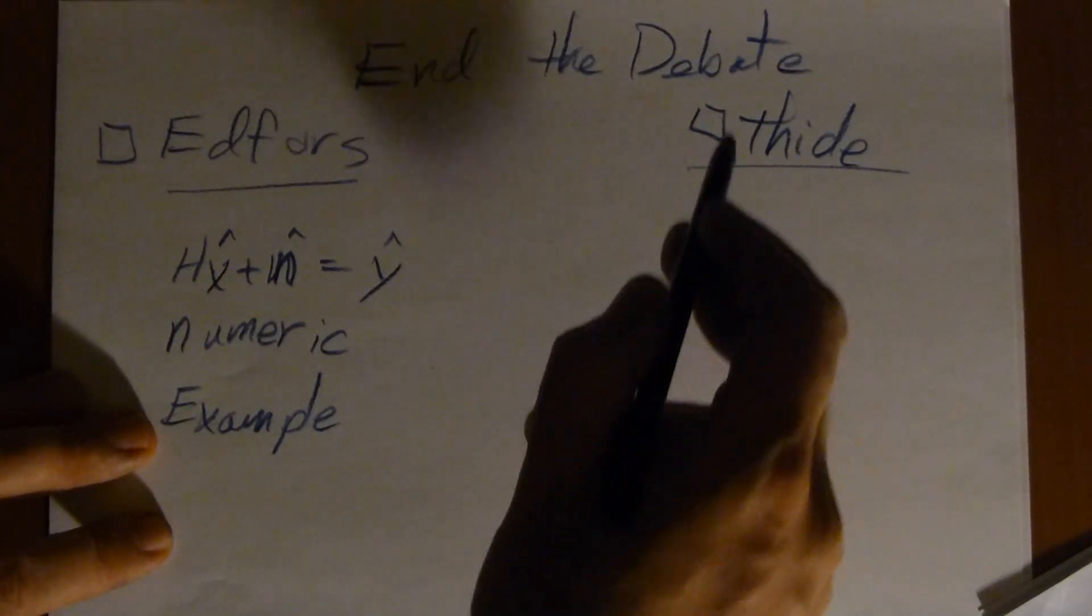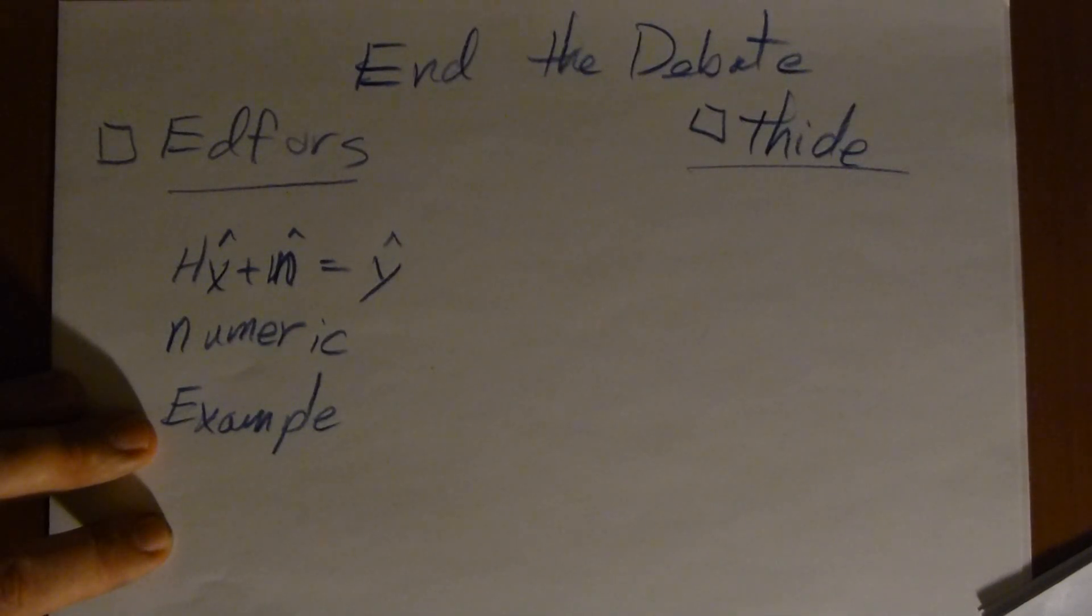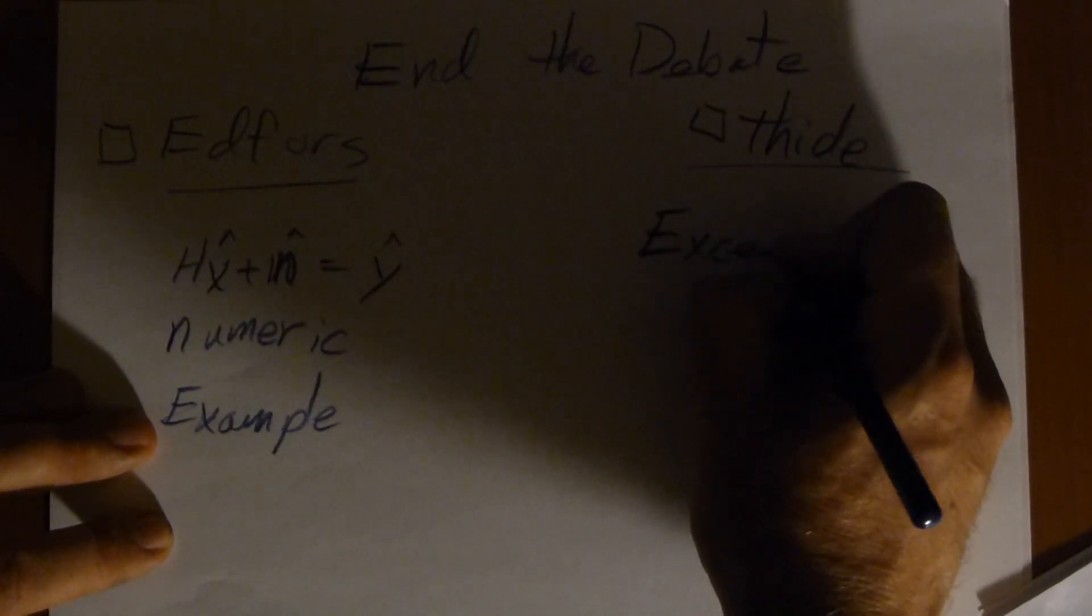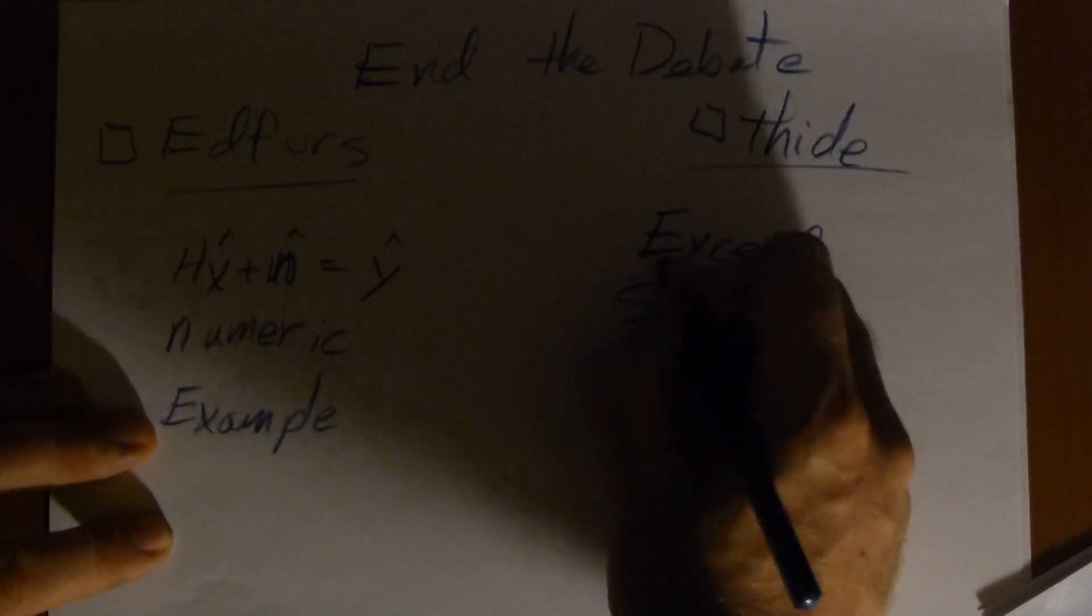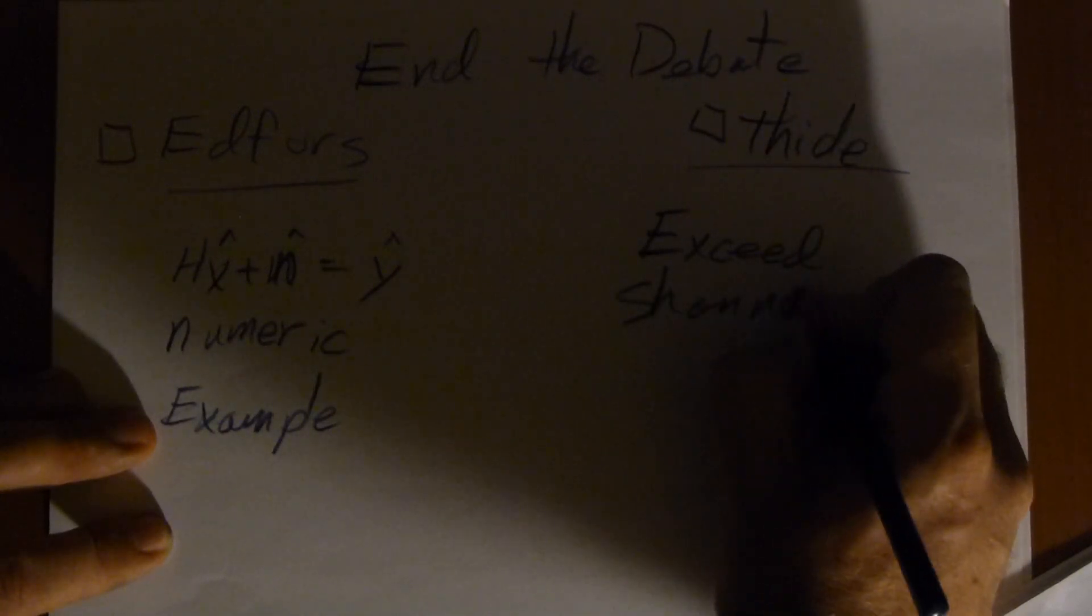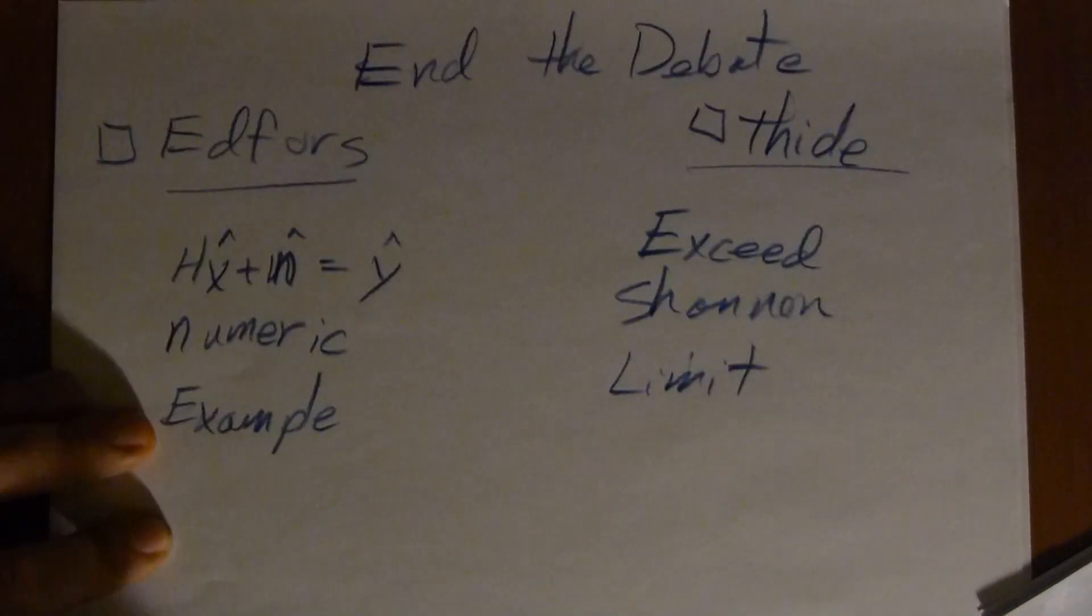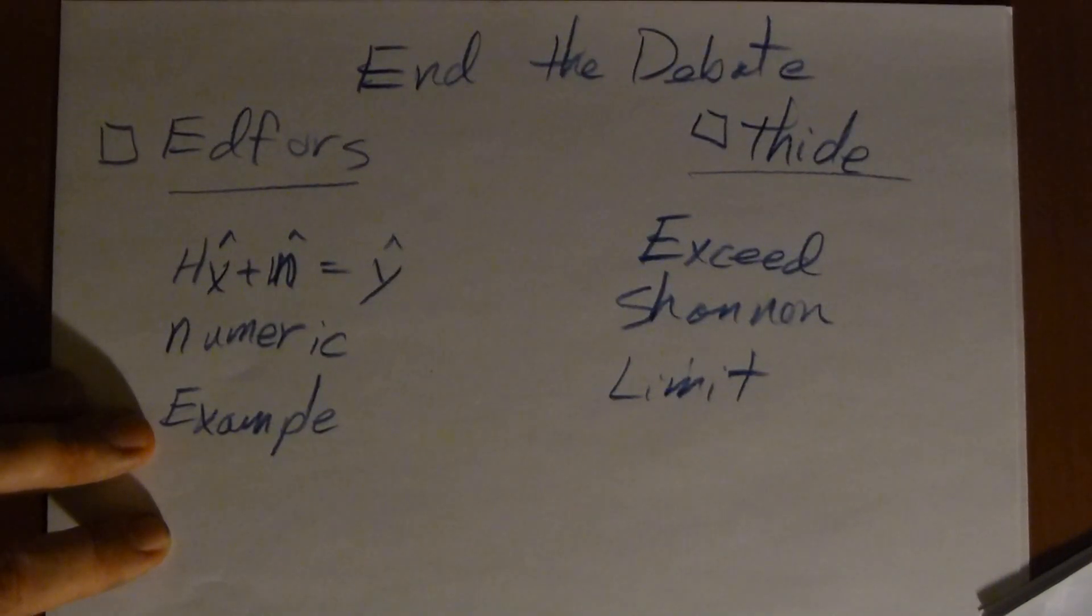Now, both Thide on the other hand, who I'll be perfectly honest, my money is on. He could do something else. Exceed the Shannon limit. It's a little, it's going to be a little bit harder. Take a bit more work. Okay, Shannon limit.